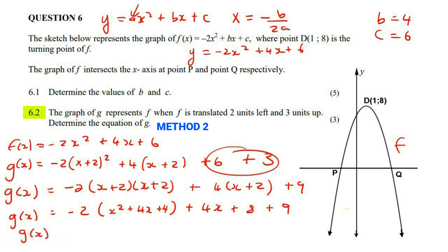Now we're just going to neaten and clean this all up. So it's going to become negative two x squared. I'm multiplying the negative two into the bracket, minus eight x minus eight, plus four x plus 17.